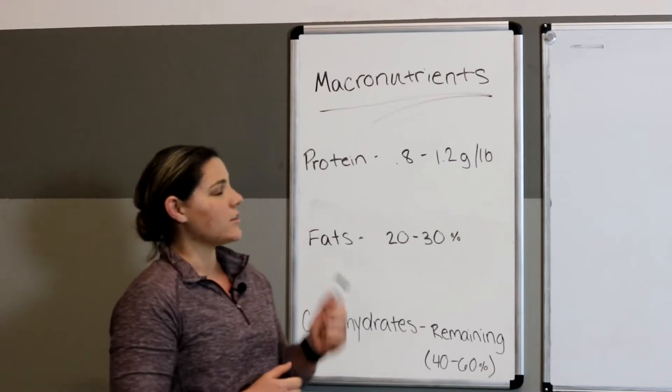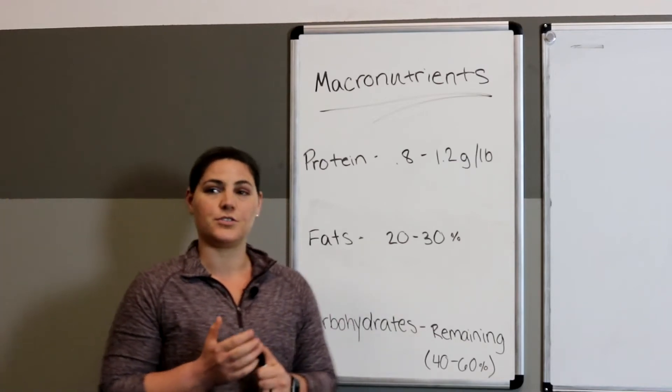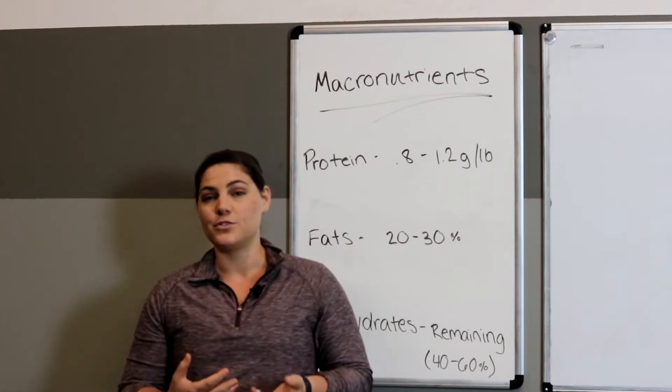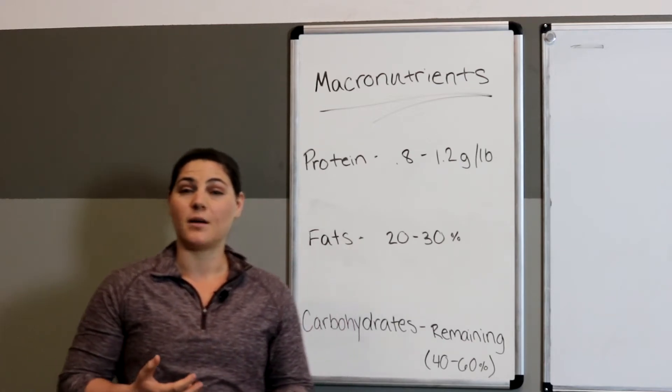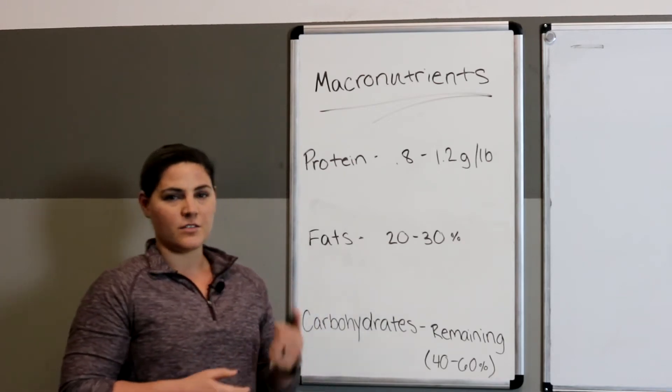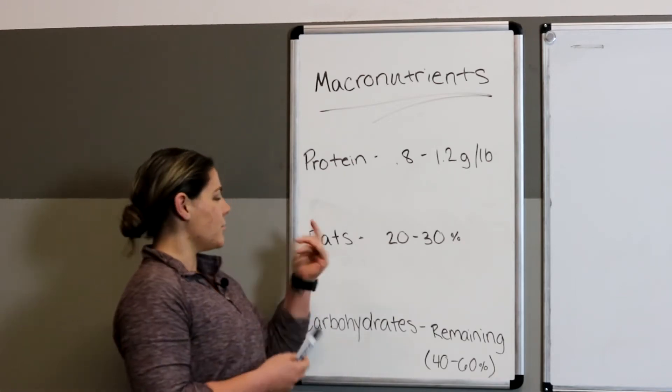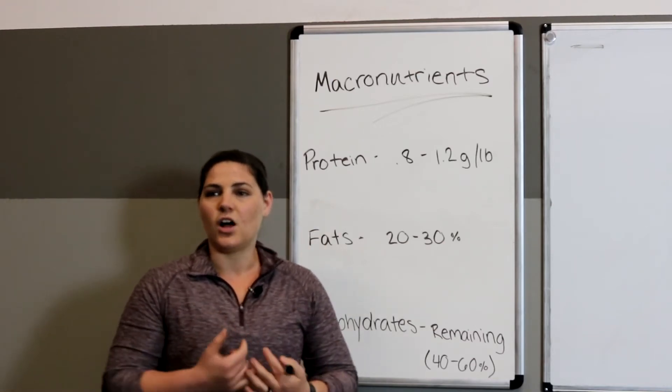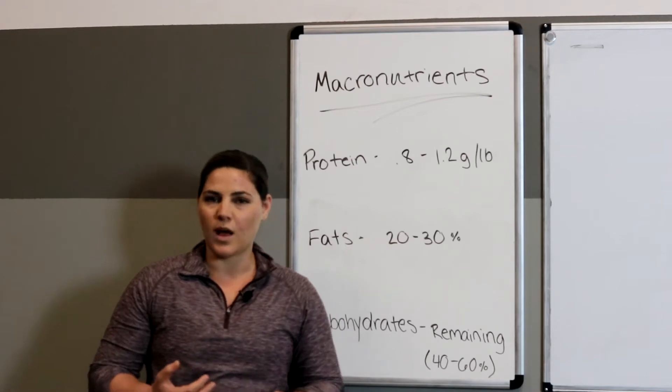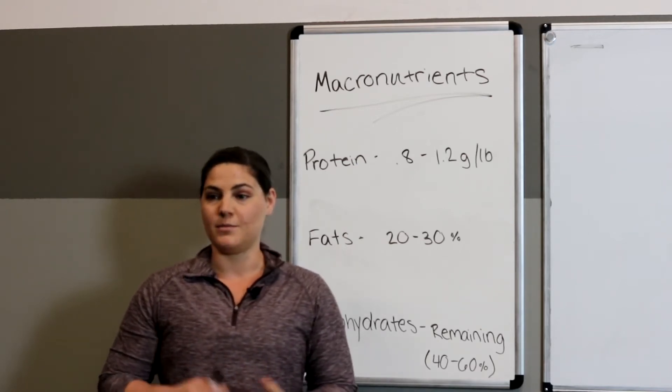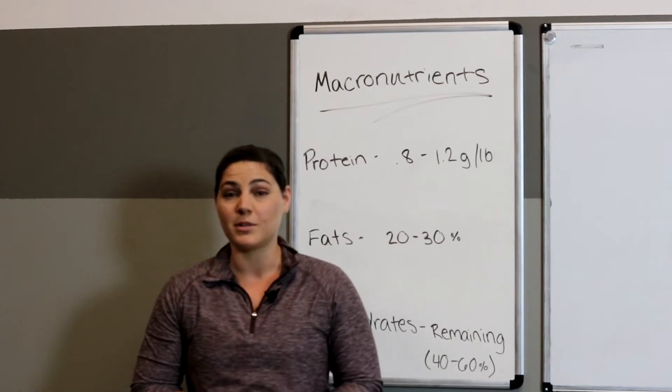So macronutrients. This is all going to be about determining the amounts of macronutrients that you should be having in your diet to optimize your body composition, to make sure you're fueling yourself properly for performance. The three main ones we're going to talk about are protein, fats, and carbohydrates. Now technically alcohol and fiber can be included in that as well, but these are the main ones that we want to focus on to really improve performance and make sure you're dialing in your nutrition properly.